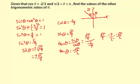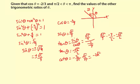The cotangent of theta is the reciprocal of tangent of theta, so cotangent theta is going to be negative two over square root of five. Rationalizing the denominator by multiplying by square root of five over square root of five gives negative two square root of five over five. So that's our cotangent of theta.